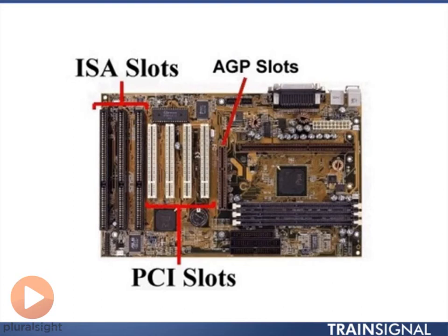There's also a brown slot here parallel to the PCI slots — that's the AGP slot. An AGP slot is specifically a video slot. The idea was that video is very resource-intensive with high demands, so this special slot called AGP was created to handle faster traffic. It stands for Accelerated Graphics Port, though it wasn't that much faster than the PCI slot — it looks similar in size, just brown instead of white.